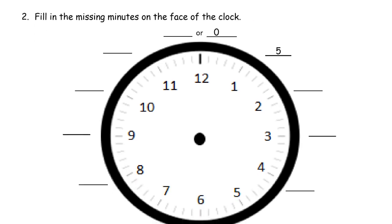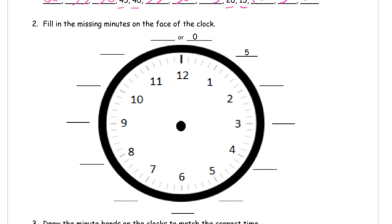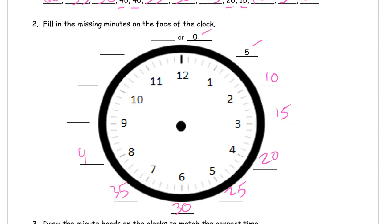Filling in the missing minutes on the face of the clock. Same thing: 0, 5, 10, 15, 20, 25, 30, 35, 40, 45, 50, 55, 60, or starting at zero. Because when you get to 60 minutes, you start a new hour, which would be zero minutes. We're counting minutes here. When you get to 60, you start over again.